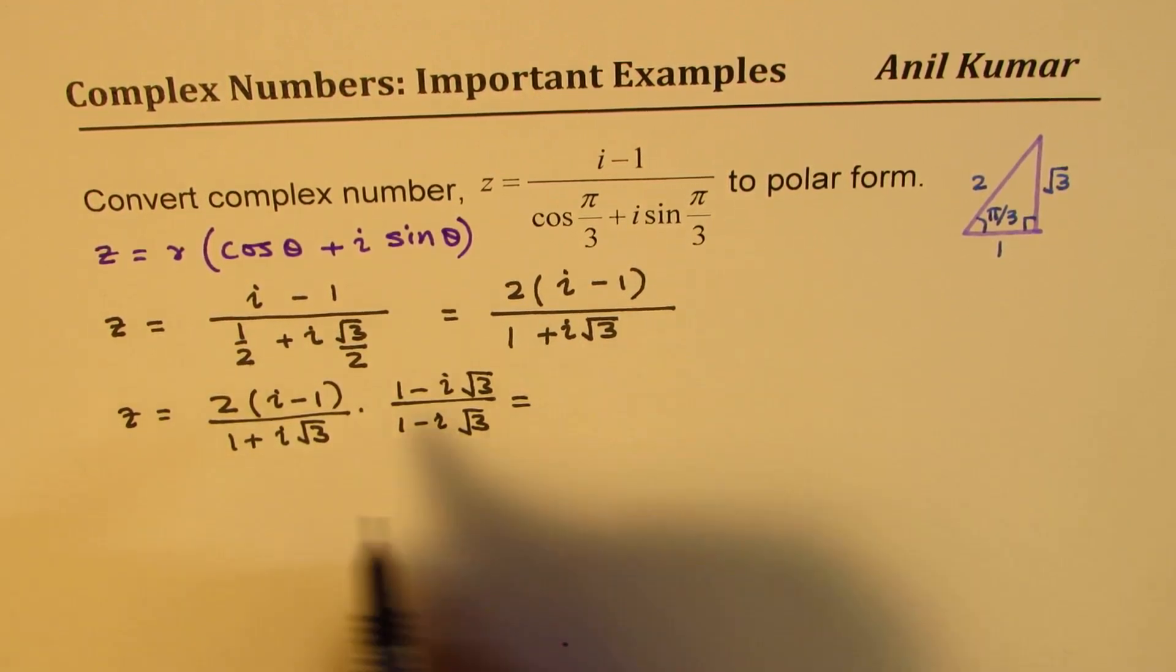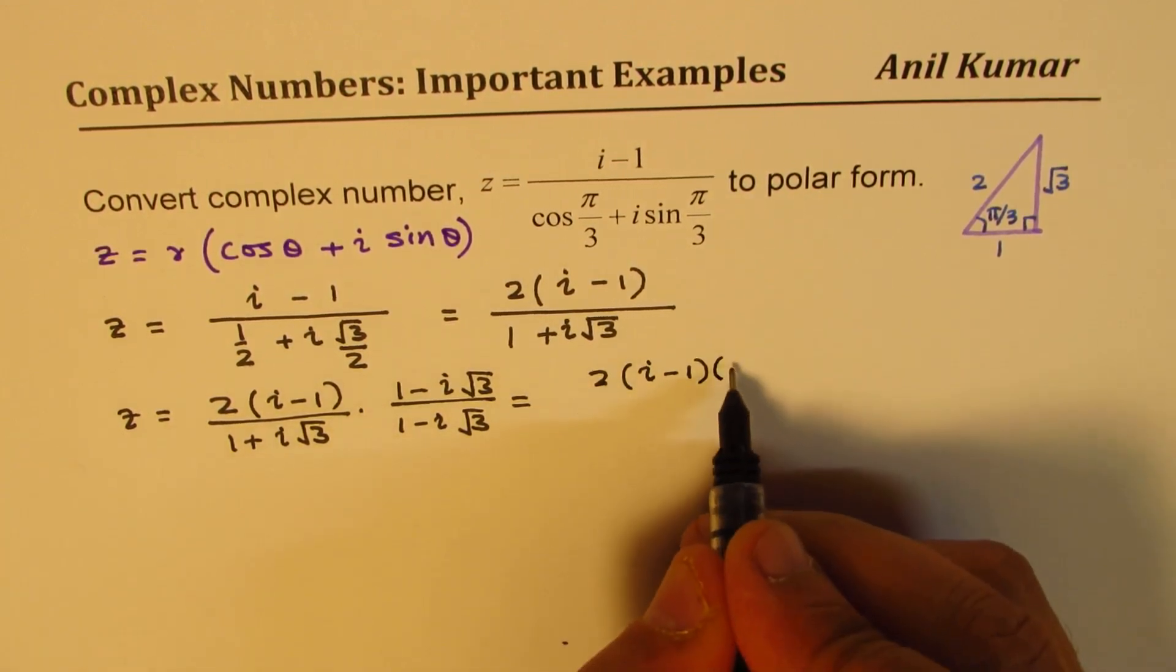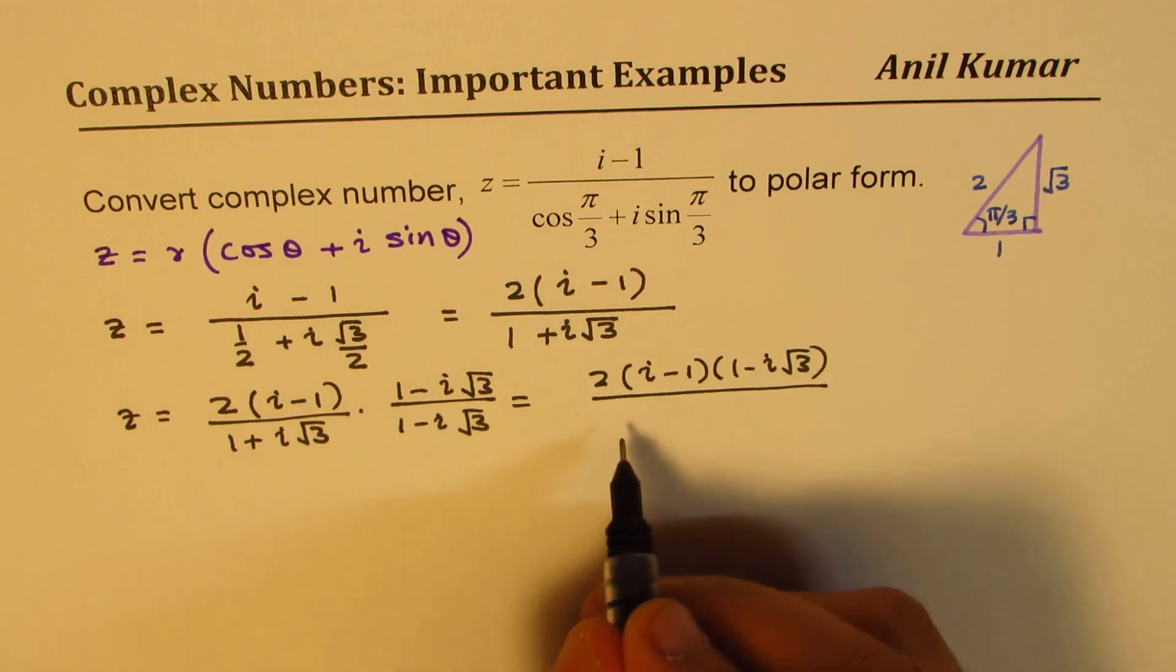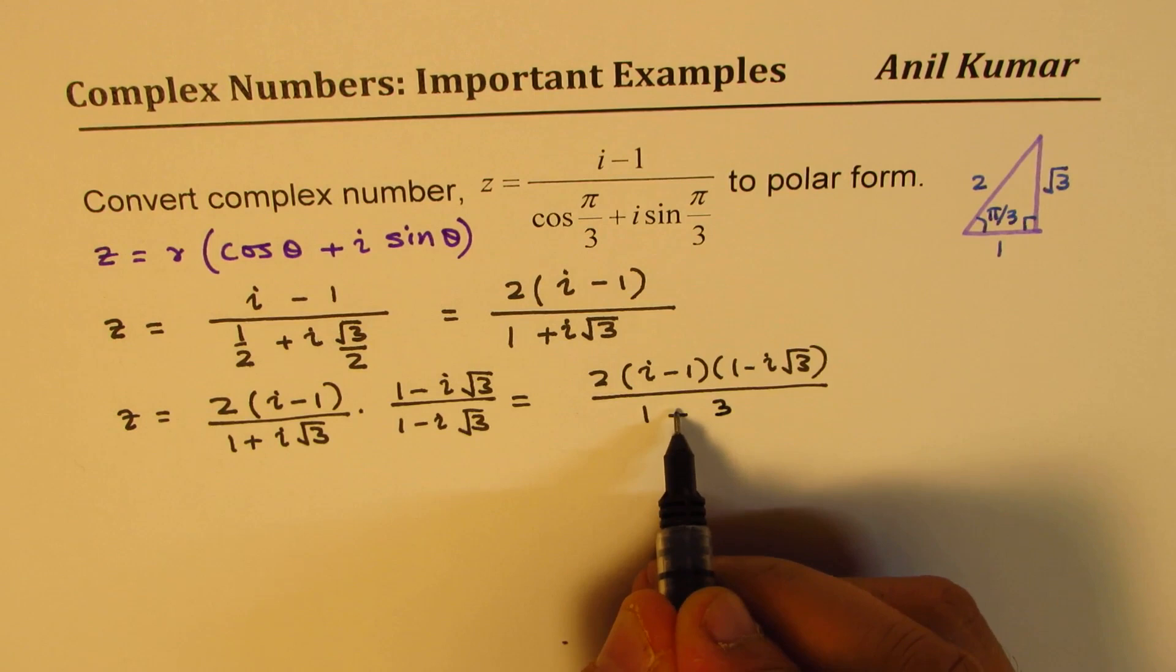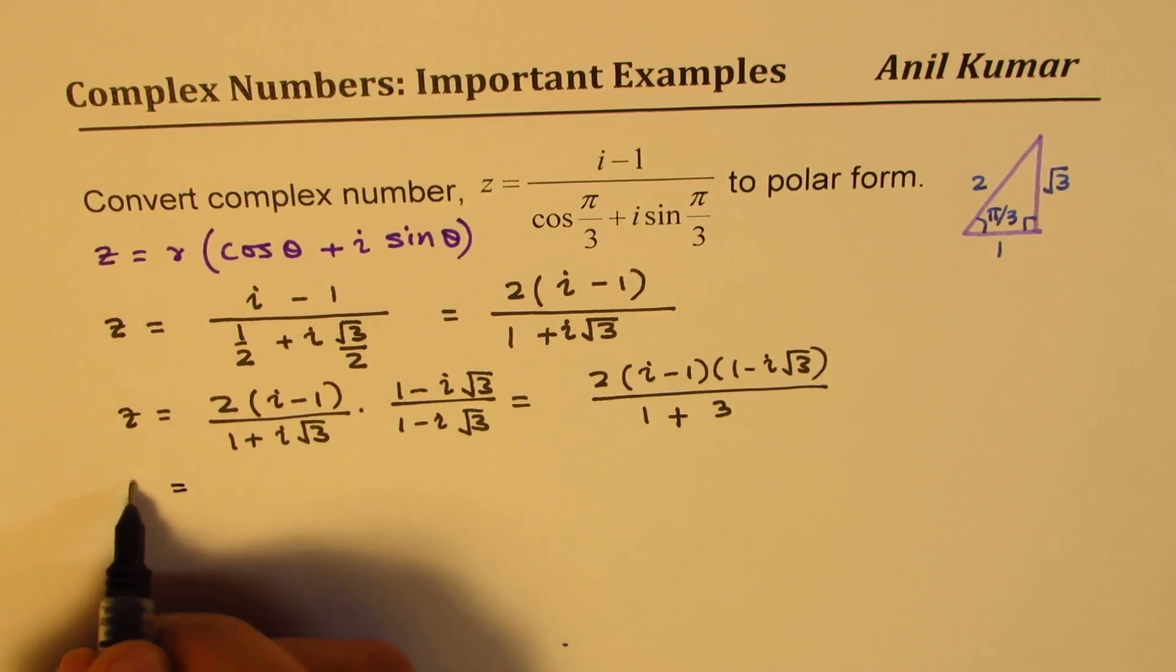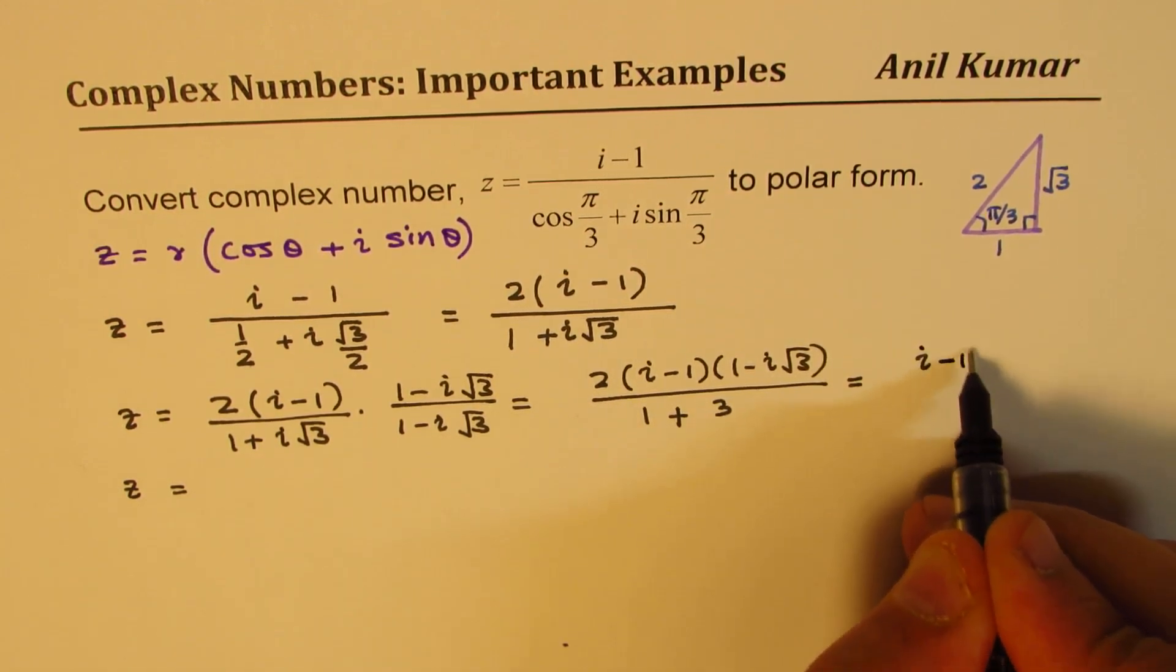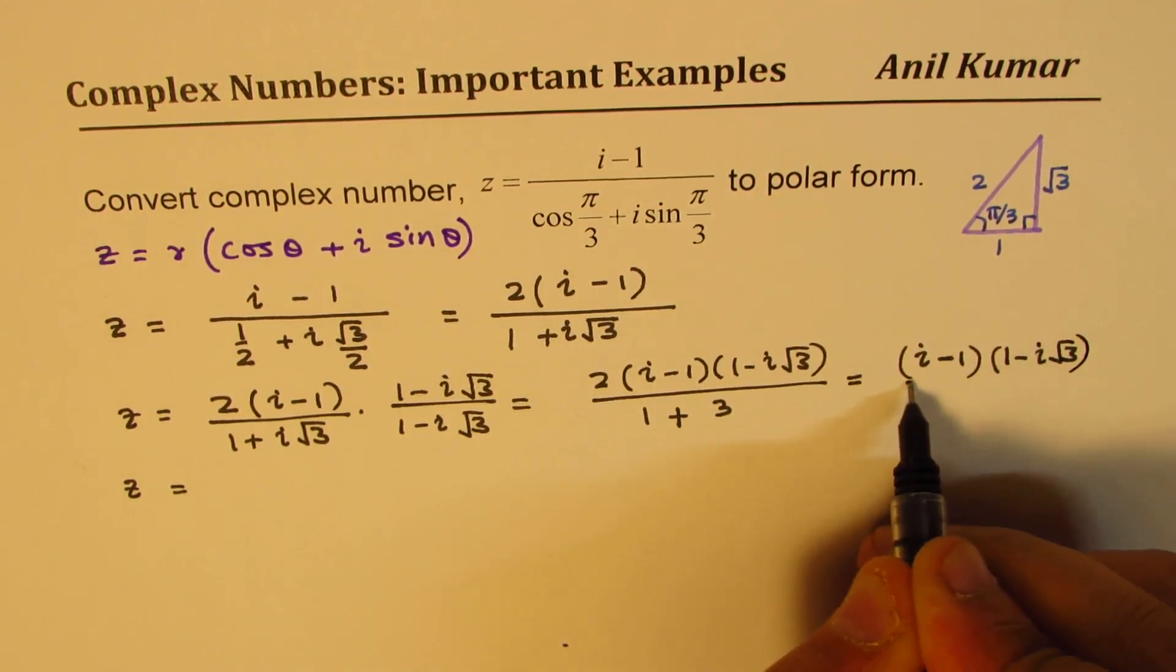So in the numerator, we will get 2 times (i minus 1) times (1 minus i√3), and in the denominator, it will be their squares, difference of squares. So 1 minus i²(3), i² is -1, so it becomes positive. We can now multiply these terms, that is 4. So let me write this as (i minus 1)(1 minus i√3) over 2, since this number is 4.